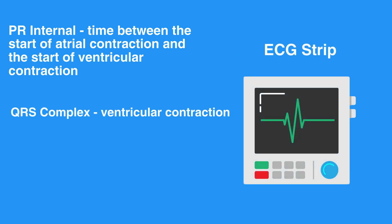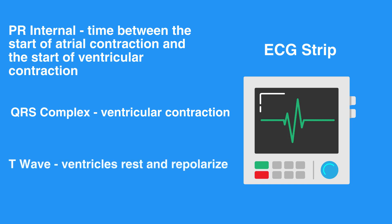Following ventricular contraction, the ventricles rest and repolarize, which registers as the T wave. The atria also repolarize, but this coincides with the QRS complex. Therefore, it cannot be observed on the ECG strip.